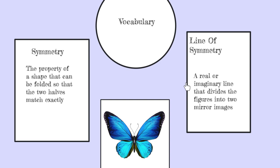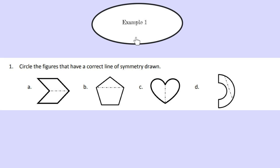At line symmetry, which can be defined as a real or imaginary line that divides the figure into two mirror images. Again, using this butterfly for reference, a line of symmetry would be a line drawn right down the middle of the butterfly.